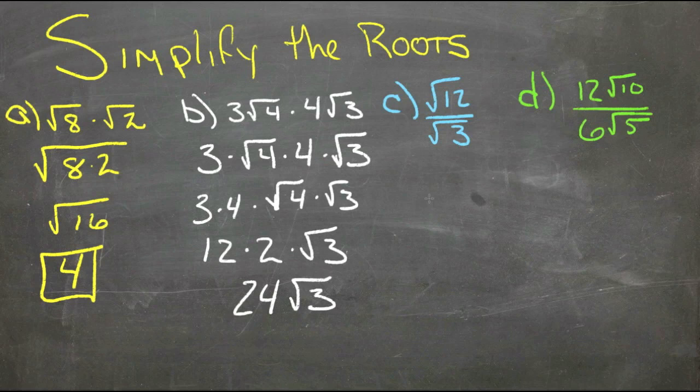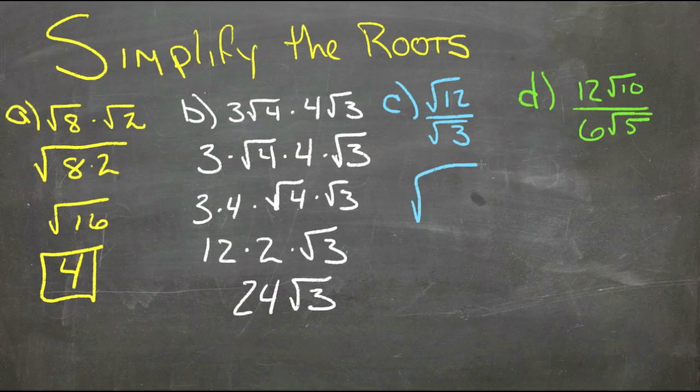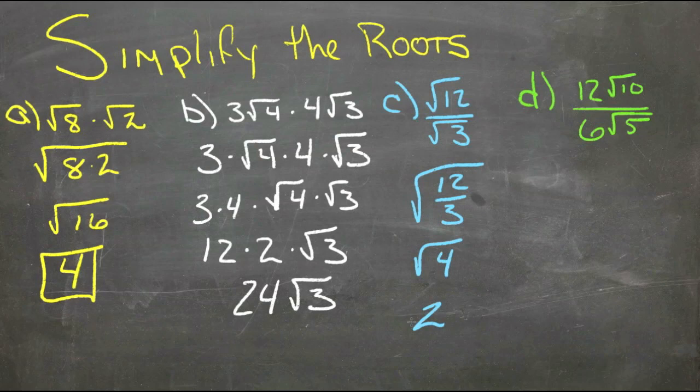For C, we have root 12 over root 3. So that's the root of 12 over 3. 12 over 3 is 4. So we have root of 4. Root 4 we know. That's an even number. 2.